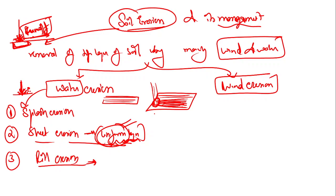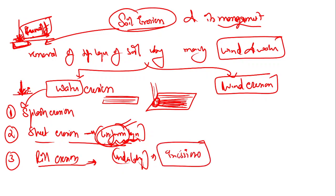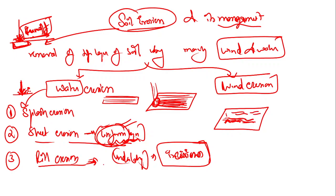Rill erosion forms because of undulating land - if the land is not straight, sometimes it forms incisions. Remember this keyword: incision. Your answers must contain these keywords otherwise your answer will not be complete. Because of this, suppose the land has an uneven surface, the sheet erosion will not be there - rill erosion will be there. Rills will form. This rill erosion is the first stage of water erosion, and over a long period of time this rill erosion will convert into gully erosion.